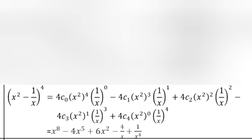Answer to part ii: (x² - 1/x)^4 = 4C0(x²)^4(1/x)^0 - 4C1(x²)^3(1/x)^1 + 4C2(x²)^2(1/x)^2